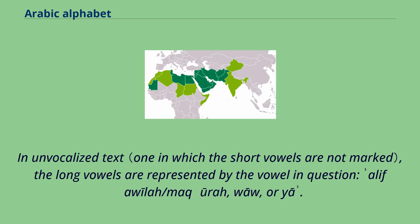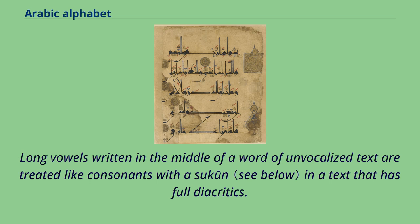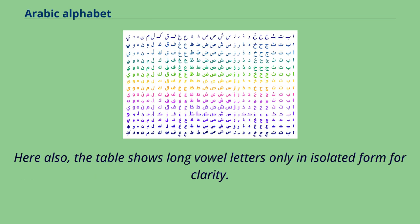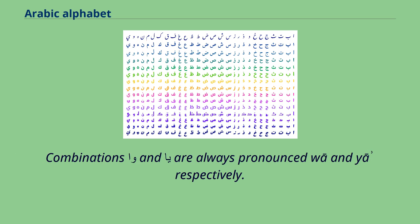In unvocalized text, the long vowels are represented by the vowel in question — alif/ta'ala/maqsura, waw, or ya. Long vowels written in the middle of a word of unvocalized text are treated like consonants with a sukun in a text that has full diacritics. Combinations waw and ya are always pronounced 'wa' and 'u' respectively.